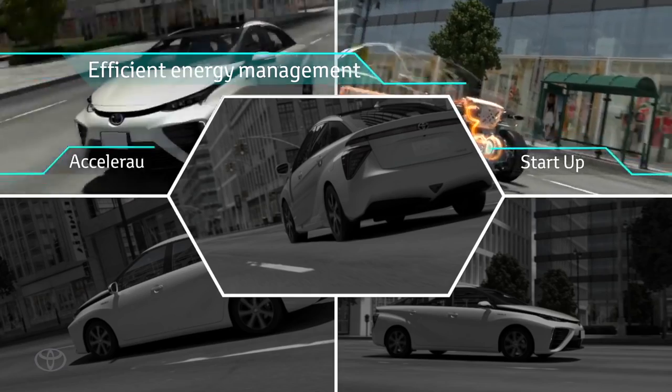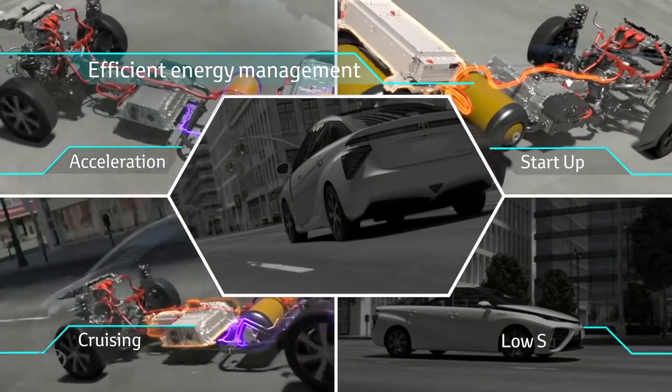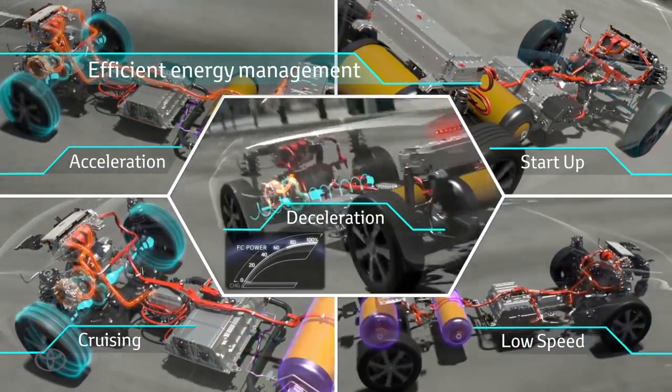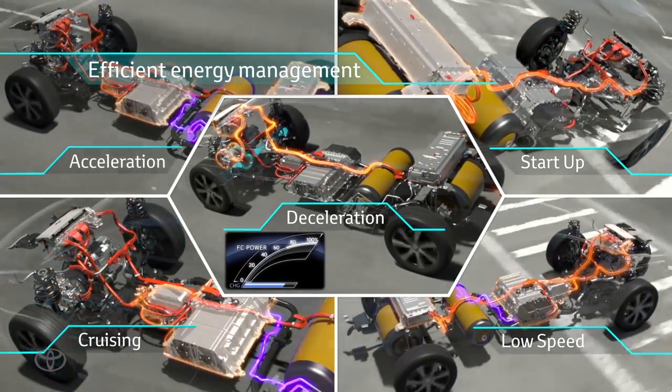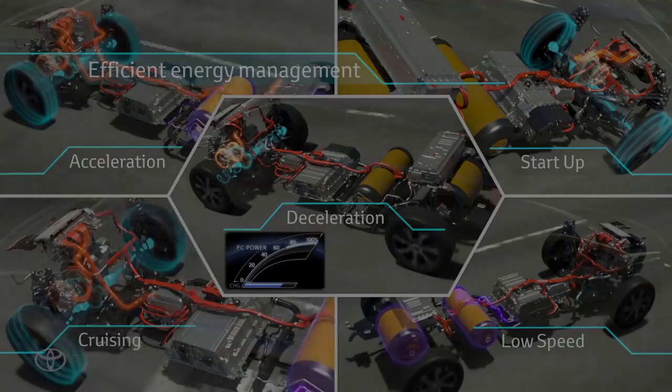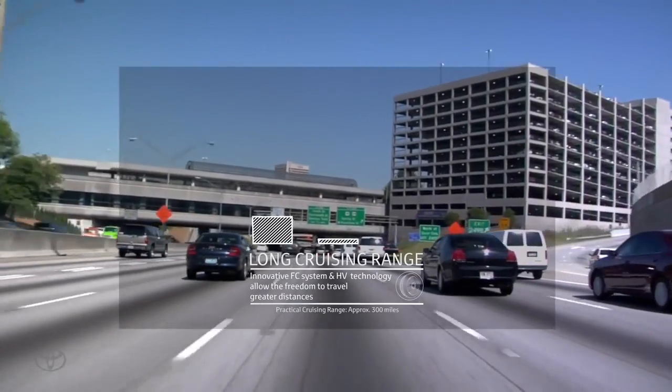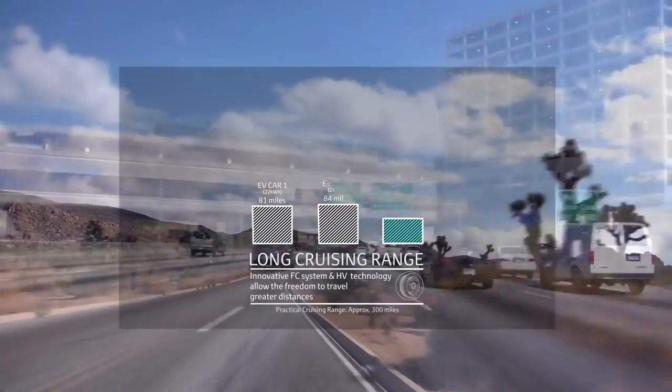FCV controls the electricity created by the fuel cell using technology developed from the hybrid vehicle. The motor works as a generator, gathering energy when the car speed is low. This accumulated energy is stored in the battery to support the fuel cell when accelerating.